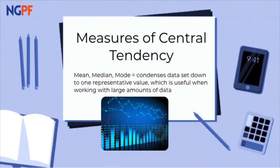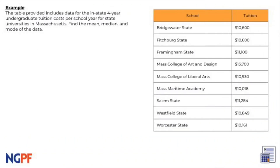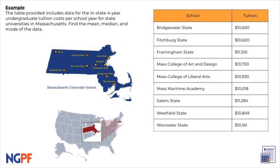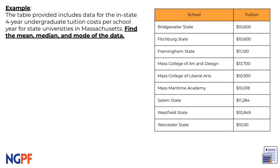Let's look at an example. I will work through this question, and after each section, you will get a chance to practice your calculations with a different data set. The table provided here includes data for the in-state four-year undergrad tuition costs per school year for some state universities in Massachusetts. They ask us to find the mean, median, and mode of the data.